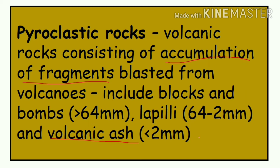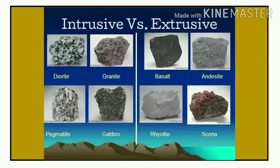Here are examples of intrusive and extrusive rocks. Intrusive rocks include: diorites, granites, pegmatites, and gabbro. Extrusive rocks include: basalt, dacites, rhyolites, and scoria. You should be able to identify which category each rock belongs to — for example, basalt is extrusive, granite is intrusive.